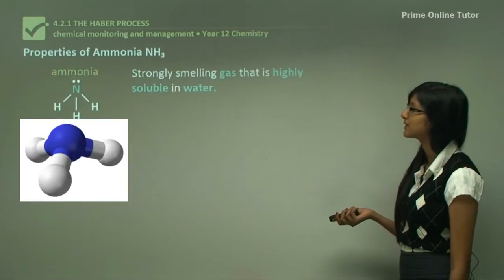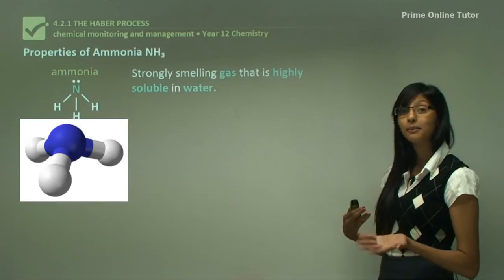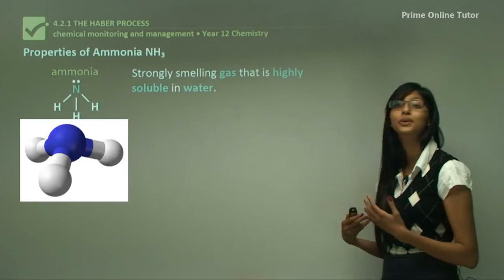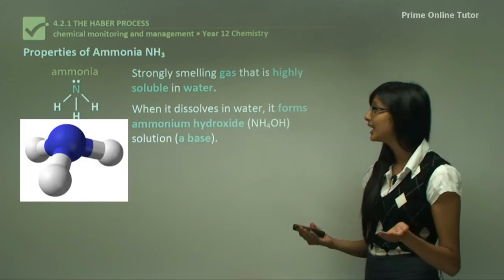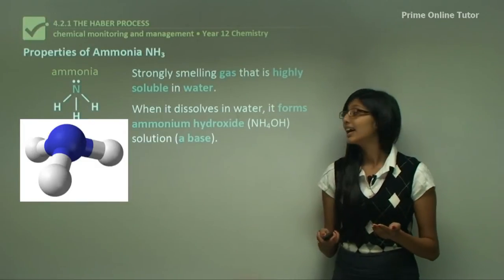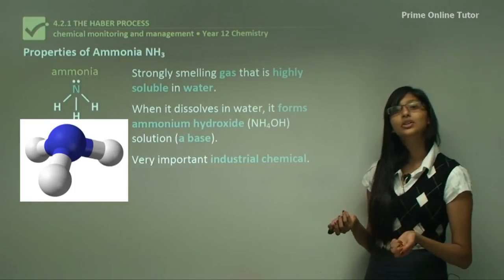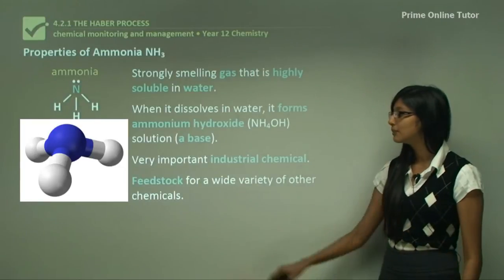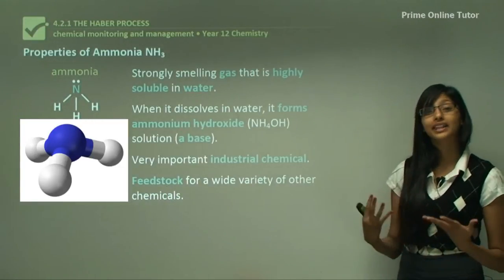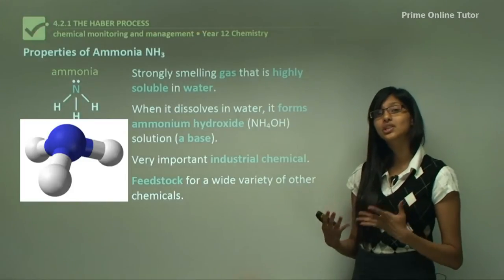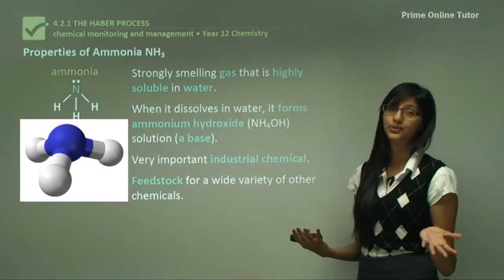Now let's look at the properties of ammonia. The properties of ammonia include: it's a very strong smelling gas and it's highly soluble in water. When it dissolves in water it forms ammonium hydroxide, which is a base. This is a very important industrial chemical because it's used as a feedstock for a wide variety of other chemicals. So ammonia can be used to generate other chemicals which can be used in the industry to form other useful products.